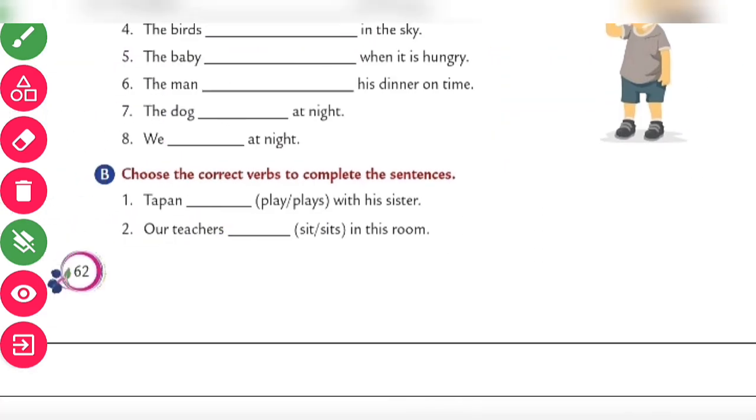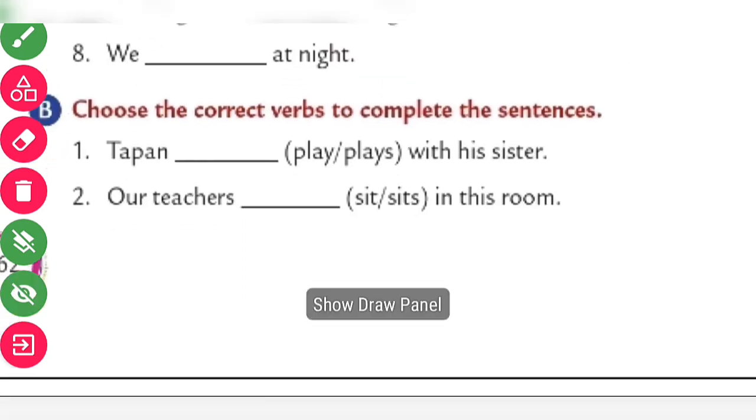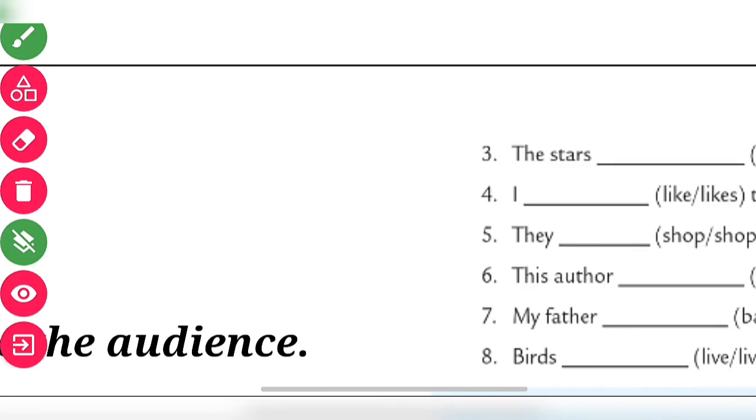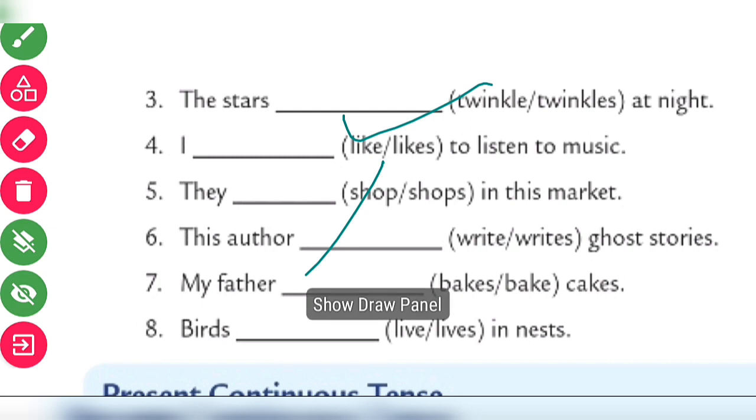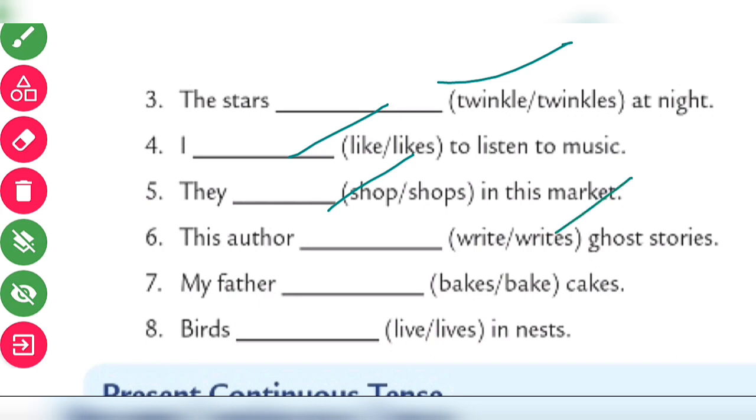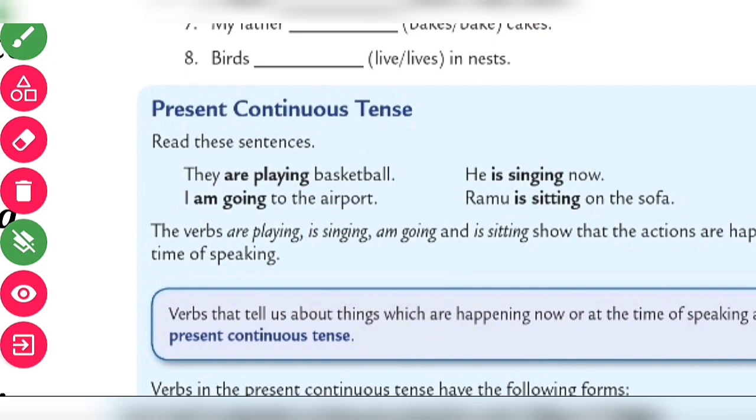Exercise B, choose the correct words to complete the sentence. Step plays with his sister, our teachers sit in this room, the stars twinkle at night, I like to listen to music, they shop in the market, this author writes ghost stories, my father bakes cakes, birds live in nests.